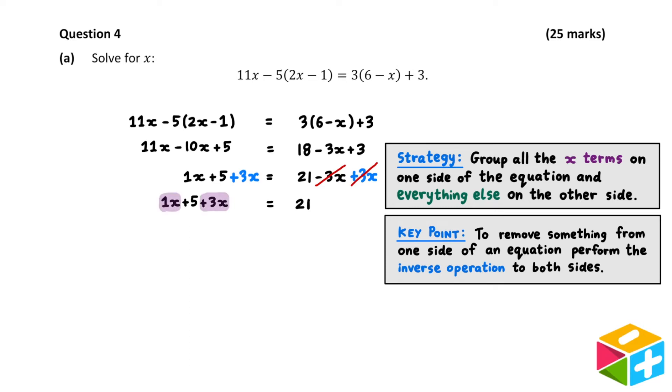I've now got my x terms on the left, but I'll want to remove this plus 5. The inverse of addition is subtraction, so to remove a plus 5, I'm going to subtract 5 from both sides of the equation. From here, we can simplify a bit. 1x plus 3x is 4x, and 21 minus 5 is 16.